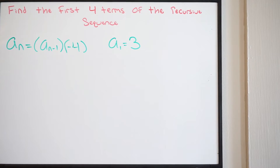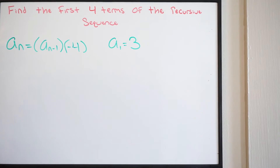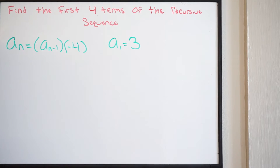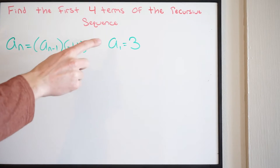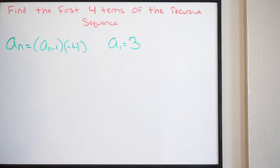In this example we're going to be talking about how to find the first four terms of a recursive sequence. In the previous video we talked about how to find the first four terms of a sequence — now we're talking about a recursive sequence, and this isn't too bad. Notice what we're given here: we're given our rule, and we're given the first term, A of 1, and it's going to be 3.